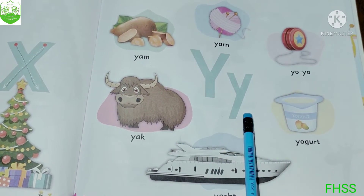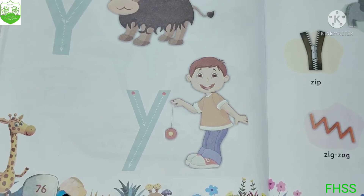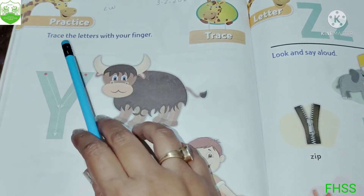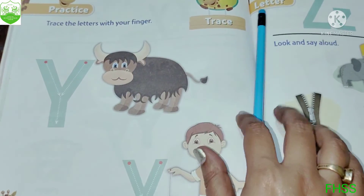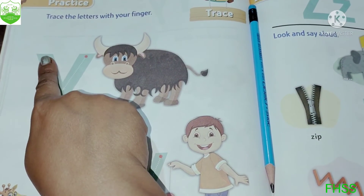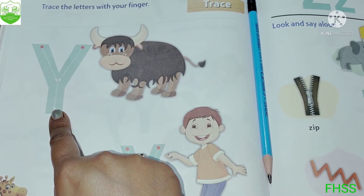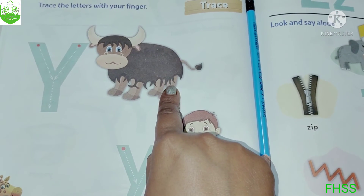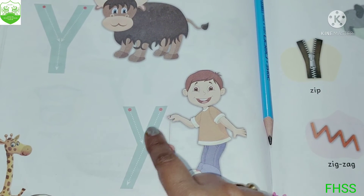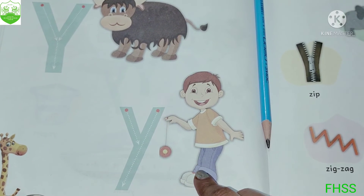Y says Y as in yum. Now children, check out the next page, 76. Here also your parents will write CW and today's date. Trace the letter with your finger — we have to trace with our index finger. For big Y: one slanting line, again one slanting line till the down. For small y also the same: one slanting line, again one slanting line, big slanting line.